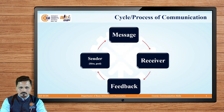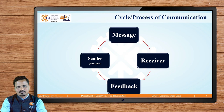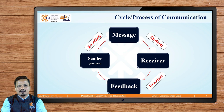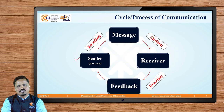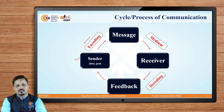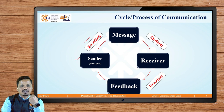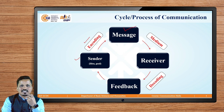Now let us see how communication actually takes place. The sender has ideas and a goal, then there is a message, then the receiver, then feedback. The sender first encodes those ideas — the information in the sender's mind is converted into a particular form through encoding. Once those ideas are encoded, it becomes a message, and that message is sent to the receiver through a particular medium.